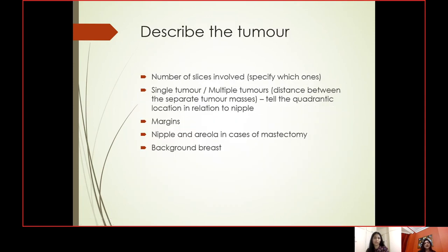Describe the tumor — whether single or multiple. If multiple tumors are present, note the distance between separate tumor masses, the quadratic location in relation to the nipple, the number of slices involved and which slices, and whether they are in consecutive slices. Then comment on the margins and nearest margins to the tumor. For mastectomy specimens, note the nipple and areola — whether retracted, involved, or showing Paget's disease macroscopically — and comment on background breast.